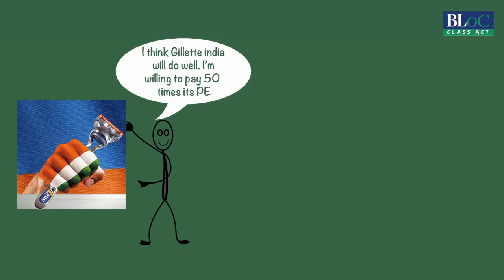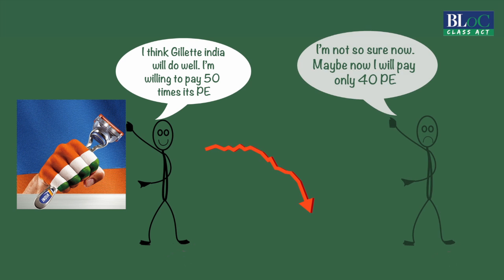Why does this happen? This is because investors who were willing to pay 50 times PE for the Gillette India stock just a few days ago — the moment the market starts falling, they start to lose confidence in their own predictions and may be willing to pay only 40 times. Therefore, though fundamentals give you the impression of precision — that is, they put an exact PE to each stock — that PE can keep changing based on human emotions. This is why technical analysis can help you choose the right time to buy a stock and the right time to sell it too.